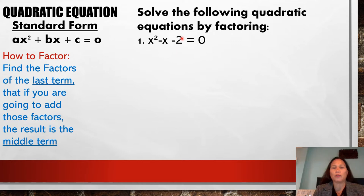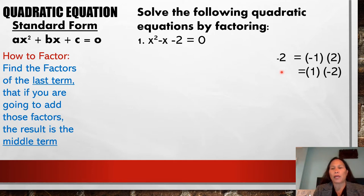What are the factors of the last term? The last term is negative 2. Think of two numbers that when multiplied together, the answer is negative 2. So, what are those numbers? Negative 2 can be written as negative 1 times positive 2. Or positive 1 times negative 2 — just flip the signs. That's still negative 2 as the product.